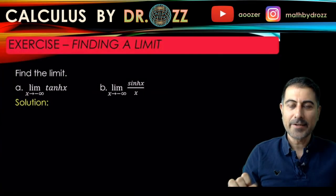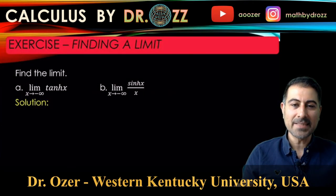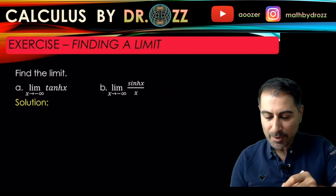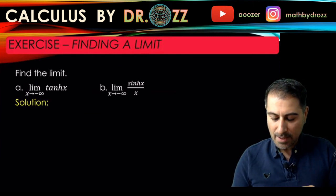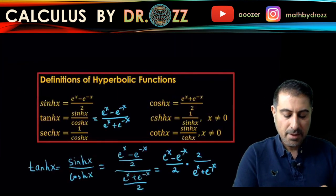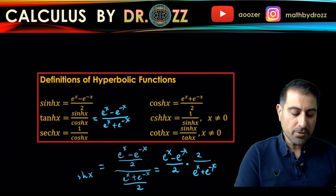Alright, let's take care of part B. We have sine hyperbolic x divided by x, and what I want to do now is go back to the definitions of hyperbolic functions and read out the definition of sine hyperbolic x.